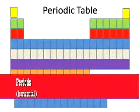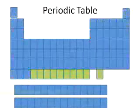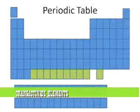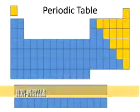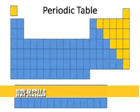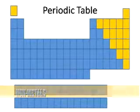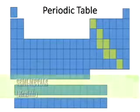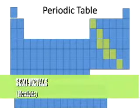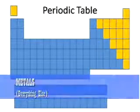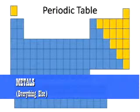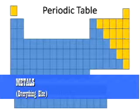The horizontal rows on the periodic table are called periods. The trans-actinide elements are the newest elements discovered, beyond the actinides. Generally, the non-metals are in the upper right-hand corner, with the semi-metals or metalloids separating them from the metals, which are basically everything else on the periodic table.